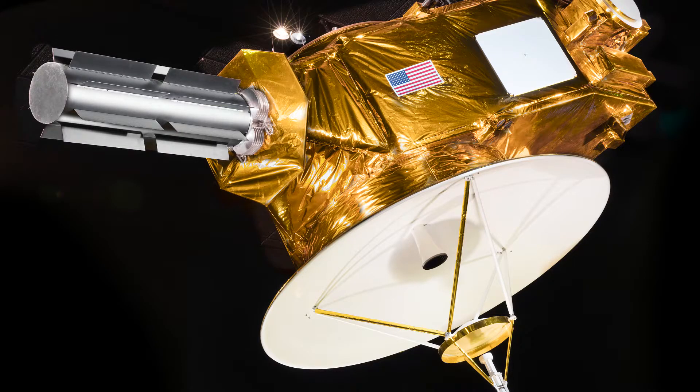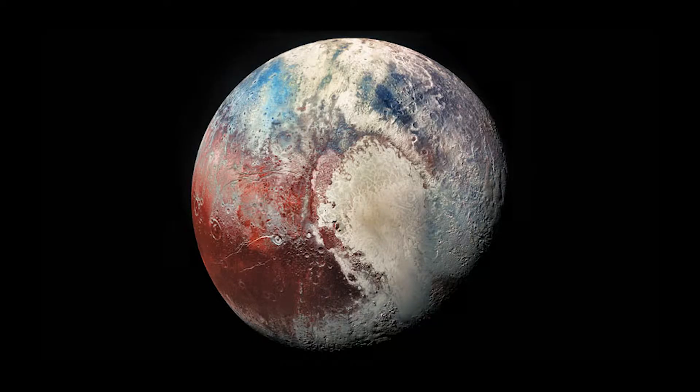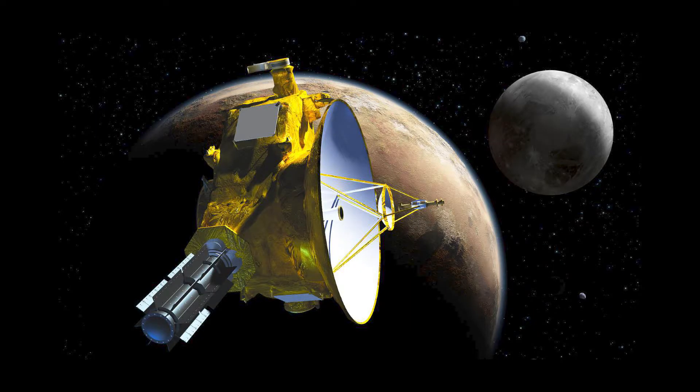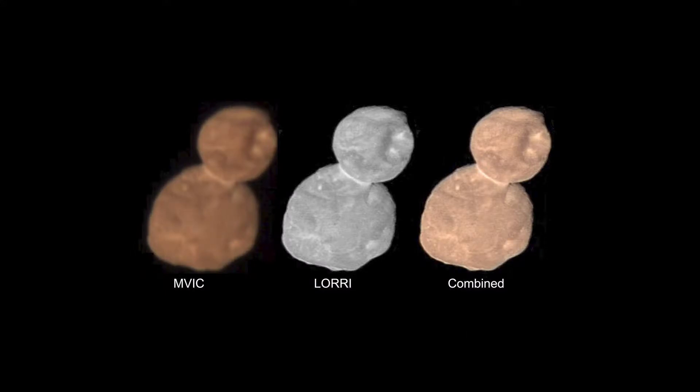The New Horizons spacecraft, after finishing its mission to take stunning close-up photos of Pluto, used its remaining fuel to lock onto one of these objects in the Kuiper belt. Through rigorous studying and mathematical work, the team behind New Horizons was able to take photos of Arokoth, the first ever fully identified object in the Kuiper belt.